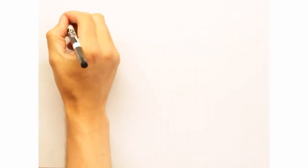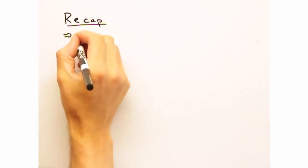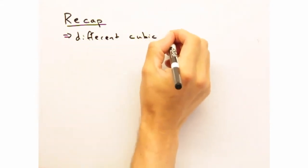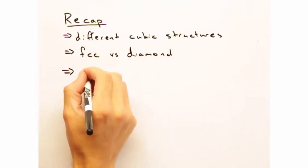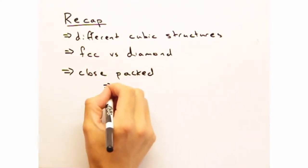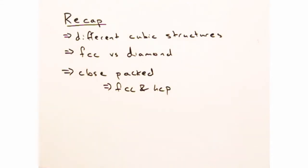Well, Eric, it looks like it's a good time to do a recap of today's video. Sounds good. Today we went over different types of centering in cubic systems, looked at the similarities between the FCC and the diamond structure, and compared both types of close-packed structures.